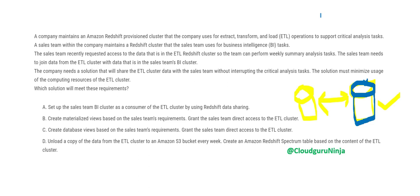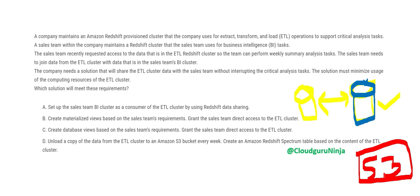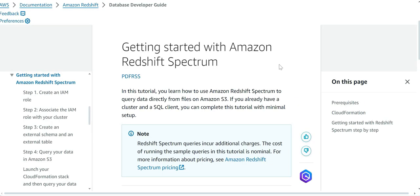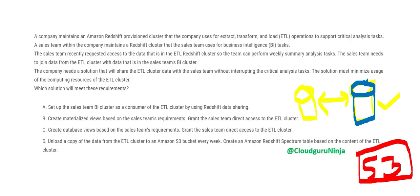Option D is a long shot. They are saying: from the blue box, put the data into the red one, which is S3, and then use Redshift Spectrum. Spectrum allows Redshift to access S3 data. You cannot always migrate flat files to Redshift, so one approach is to keep your data in flat files and access it using Spectrum. This solution will minimize usage of resources on the ETL cluster.